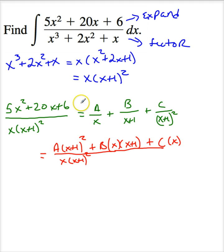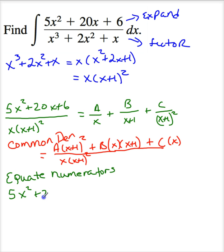So now my denominators are the same. I'm not going to rewrite all this. So I can equate numerators. So the next step is equate the numerators. All right, we're here. I got a common denominator. So when I equate the numerators, I have 5x squared plus 20x plus 6 is equal to...